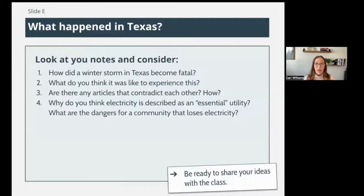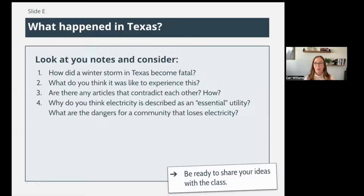Think about and consider — look at your notes and the summaries I just went through. How did a winter storm in Texas become fatal? How did this winter storm — we've always had winter storms — how did this one become fatal? Also think about what do you think it was like to experience this? And are there any articles that kind of contradicted each other? Some people were blaming the windmills, some the natural gas, some the evacuation orders — everyone wants to place blame but they all placed it in different areas.